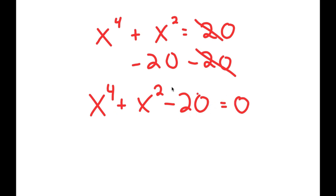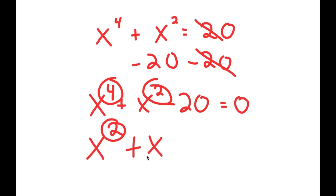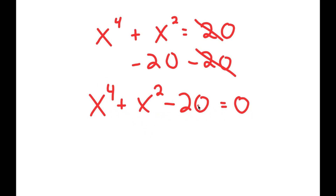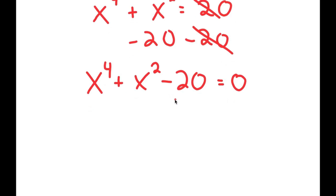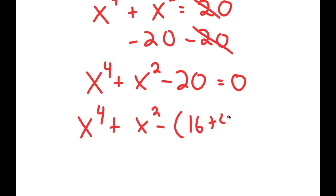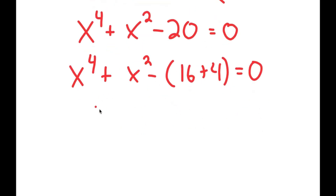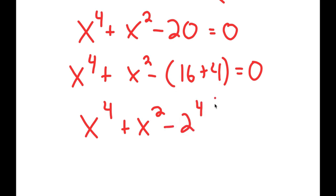Now, this may seem like a quadratic equation, but it's not because we have the power of 4 as our primary term, led by the power of 2. In a normal quadratic equation, we have 2 as our primary, then 1, then some constant C. We can't factor this using the quadratic formula since it's not a quadratic equation. So what I'm going to do is rewrite this as x to the power of 4 plus x squared minus 16 plus 4. I rewrote 20 as 16 plus 4 because negative 16 is the same as negative 2 to the power of 4, and negative 4 is the same as negative 2 squared.